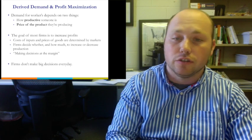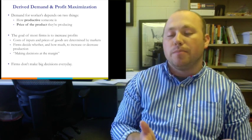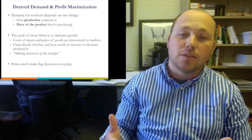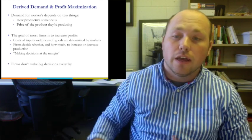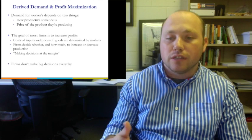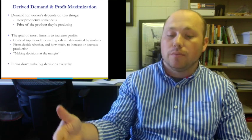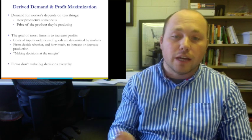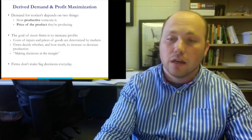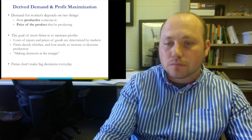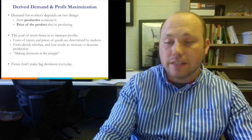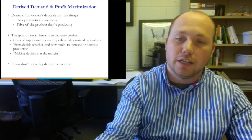Part of profit maximization is that firms get to decide whether and how much to increase or decrease production. We can look at markets where they decide how many sandwiches to sell, how many baseballs to sell. This is known as making decisions at the margin — as I produce, I decide: do I want to produce another one? Firms don't make big capital decisions every day; daily they determine how much to produce today, tomorrow, and after that.